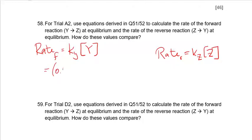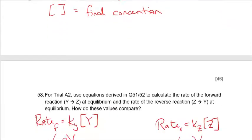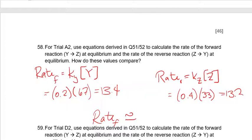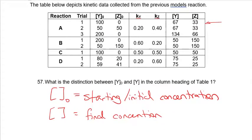So ky is 0.2 and kz is 0.4. I plug those in: 0.2 times something and 0.4 times something. This value is not our initial — it's our final concentration. Our final concentrations are 67 and 33. So: 0.2 × 67 ≈ 13.4 and 0.4 × 33 ≈ 13.2. My rate of the forward is approximately equal to my rate of the reverse reaction. Even though we have 67 molecules of y and only 33 of z, when we plug concentrations in with ky and kz, the forward and reverse rates are very similar.